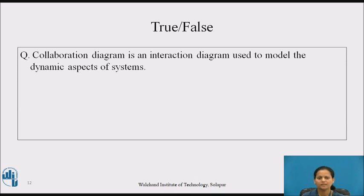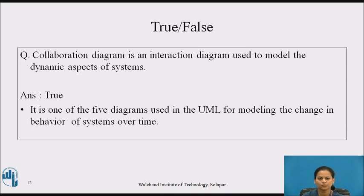Now pause the video for a while and try to answer this true-false question: collaboration diagram is an interaction diagram used to model the dynamic aspects of systems. The answer is true. It is one of the five diagrams used in UML for modeling the change in behavior of systems over time.